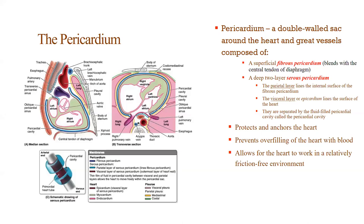Looking at the heart, there are a couple of structures important to know. The pericardium is a one-walled sac that surrounds the heart and great vessels. It has a fibrous and a serous portion — the fibrous portion is superficial, the serous portion is deep. The deep serous portion is broken up into two layers: the parietal and the visceral. The visceral layer lies directly on the organ; the parietal layer is on the internal surface of the fibrous pericardium.